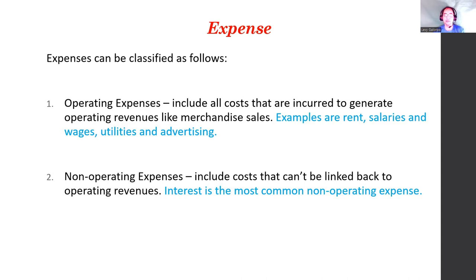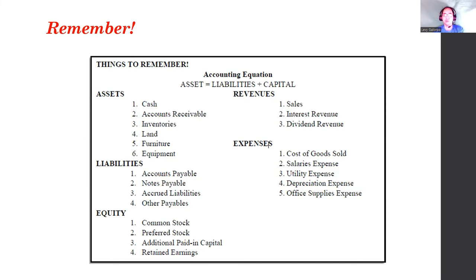Expenses can be classified as operating expenses and non-operating expenses. Operating expenses are those incurred to generate operating revenues, like merchandise sales. Examples include rent, salaries and wages, utilities, and advertising — for instance, rent paid to use a space as a factory or office. Non-operating expenses include costs that cannot be linked back to operating revenues — for example, interest paid on a bank loan.